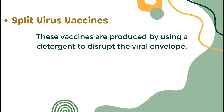Split Virus Vaccines. These vaccines are produced by using a detergent to disrupt the viral envelope. Split vaccines are influenza virus particles disrupted by diethyl ether or detergent treatment. While split vaccines still contain all viral proteins, the original viral particulate organization and viral ssRNA are mostly lost, losing some of the inherent immunogenicity of the virus.